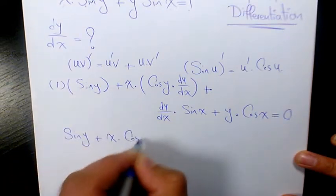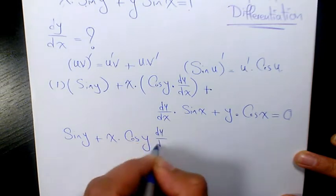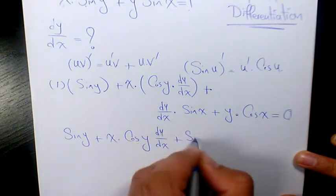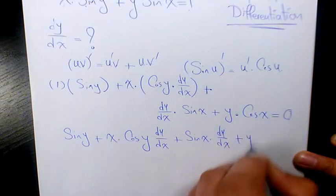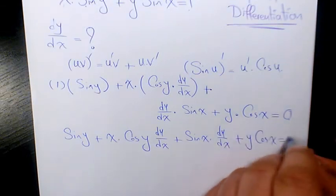So it's going to be sine y plus x times cosine y times dy over dx, plus sine x times dy over dx, plus y cosine x equals 0.